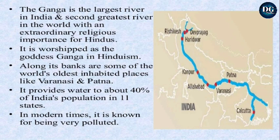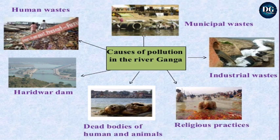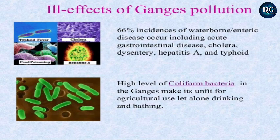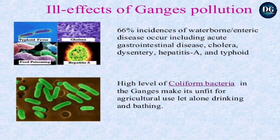Causes of pollution in the river Ganga include: industrial waste, religious practices, dead bodies of animals and humans, the Haridwar dam, human waste, and municipal waste. The real effects of Ganga pollution include: 66 percent incidence of waterborne enteric diseases, including acute gastrointestinal disease, cholera, dysentery, hepatitis A, and typhoid.